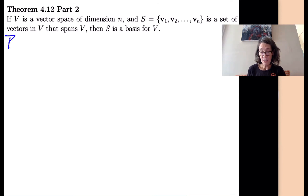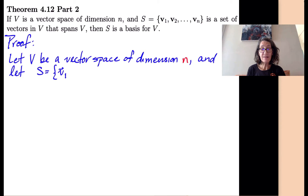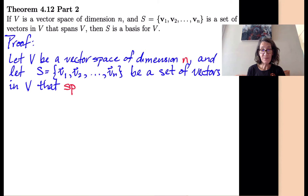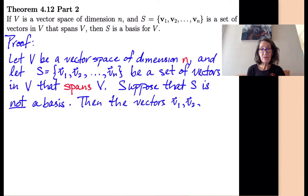We're going to do this by contradiction. So let's write down all of our assumptions. Let v be a vector space of dimension n, and let s be the set {v1, v2, ..., vn}, a set of vectors from v that spans v. But now let's assume, by way of contradiction, that s is not a basis. So that means it's not linearly independent — so the set {v1, v2, ..., vn} is a linearly dependent set.